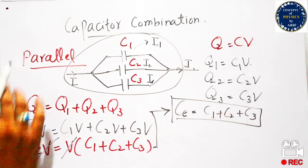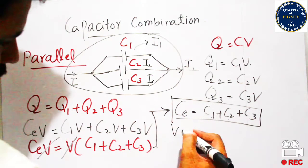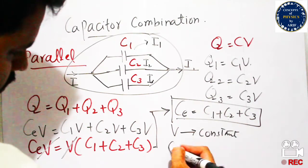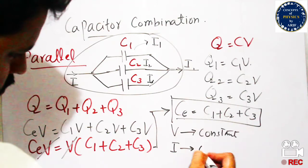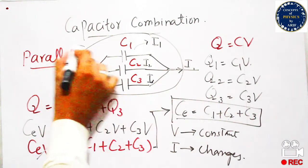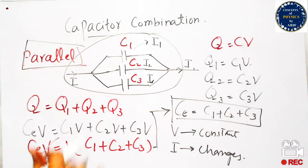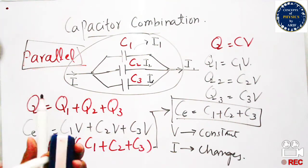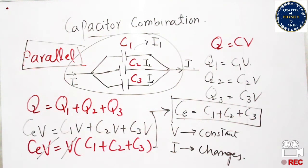To summarize: in parallel combination, the equivalent capacitance Ce is greater than individual capacitance, while in series combination Ce is smaller than individual capacitance. In parallel combination, voltage remains constant but current keeps changing in each branch, which is why we write I1 across C1, I2 through C2, and I3 through C3.